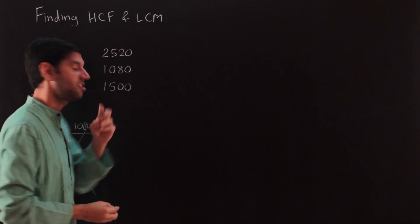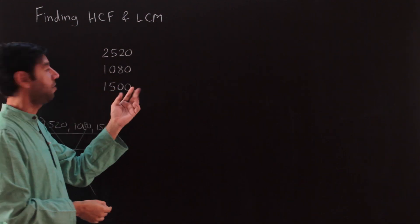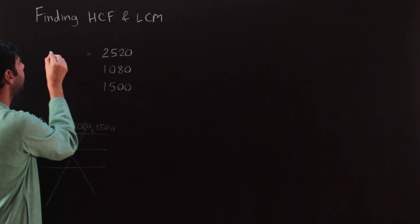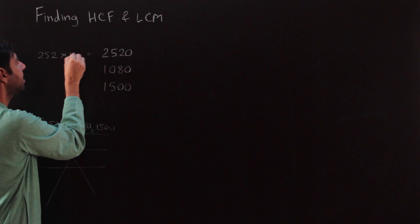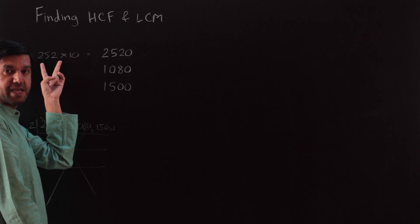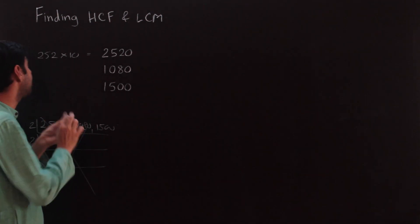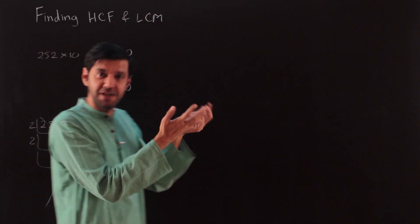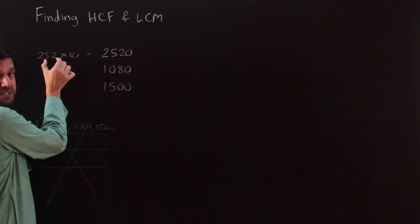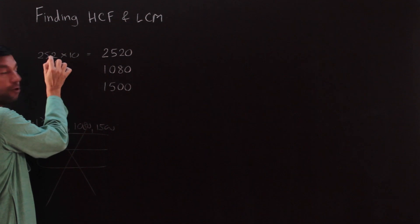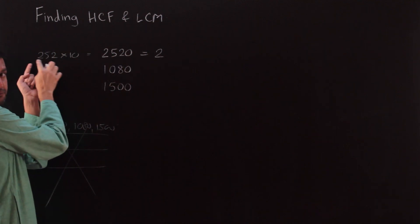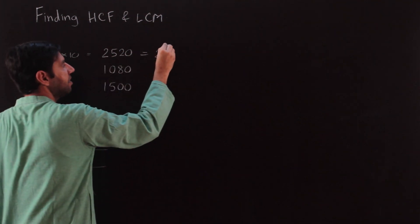What you need to do is factorize, but break numbers into larger chunks. For example, you see a zero everywhere, so it's as good as 252 into 10. The 10 breaks into primes 2 and 5. Now look at 252 — don't be obsessed with 2×2×2. Check if it's divisible by 4: yes, 52 is divisible by 4. Is it divisible by 8? No, 8×3=24 doesn't work. So the largest power of 2 here is 4, which is 2 cubed.